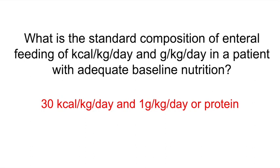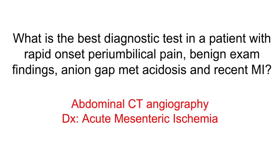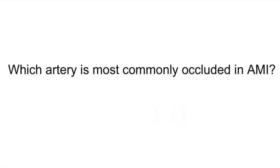What is the best diagnostic test in a patient with rapid onset periumbilical pain, benign exam findings, an anion gap metabolic acidosis, and a recent MI? Abdominal CT angiography, because we're thinking this patient may have acute mesenteric ischemia. Which artery is most commonly occluded in acute mesenteric ischemia? The superior mesenteric artery.